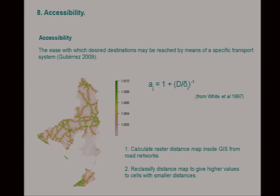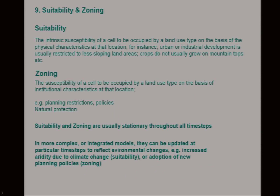Accessibility — this is a fairly simple equation from Roger White's work in the 90s. We take our raster, a simple distance map from road networks, which you could calculate in R or in another GIS, and we reclassify it to give higher values to cells with closer distances. Suitability is the intrinsic susceptibility of a cell to be occupied. Zoning covers the institutional characteristics — planning restrictions and policies. Generally these are stationary throughout the time steps, though you could update them in an integrated model, for example for aridity due to climate change.